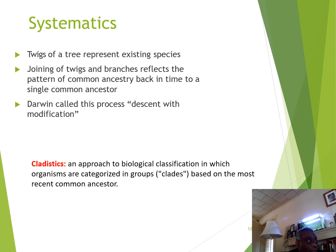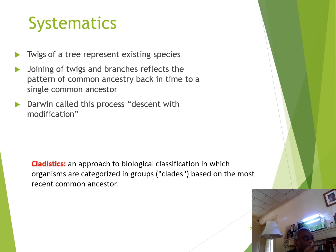The approach of analyzing these branching tree structures is called cladistics — an approach to biological classification where you organize organisms into groups called clades, based on their most recent common ancestor. A clade can have a formal name like a class, or a more informal name. As we go through the course, we'll be using both formal and informal groupings.